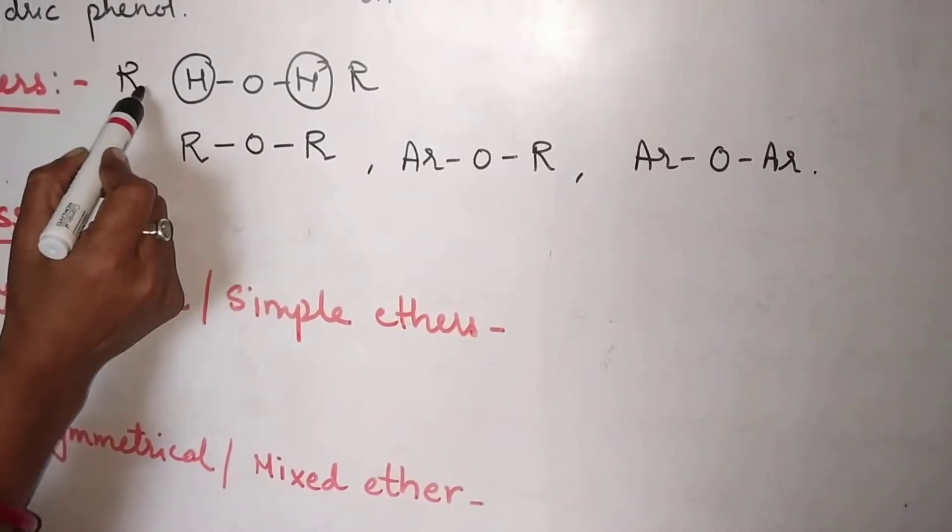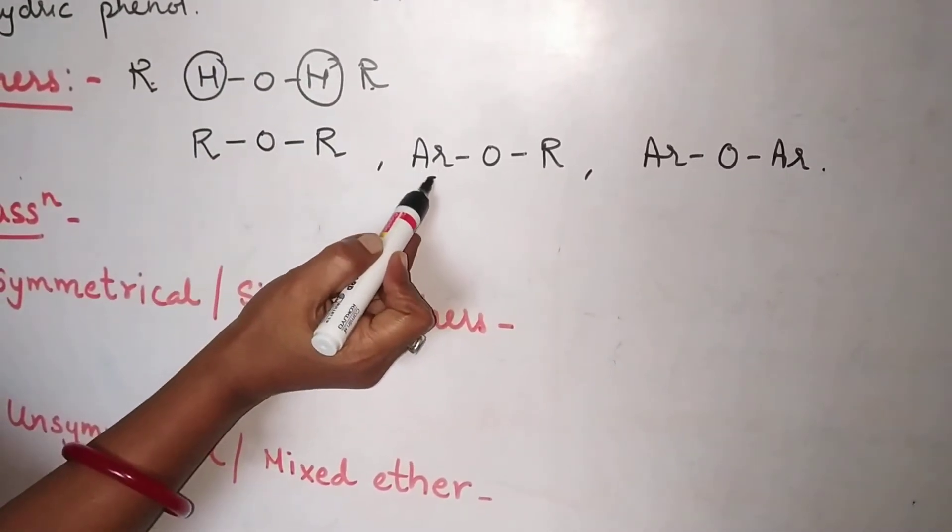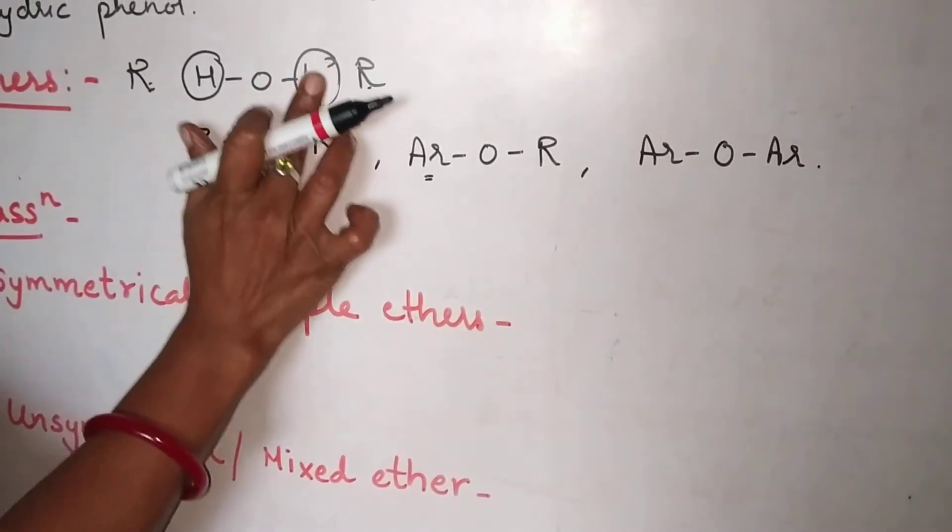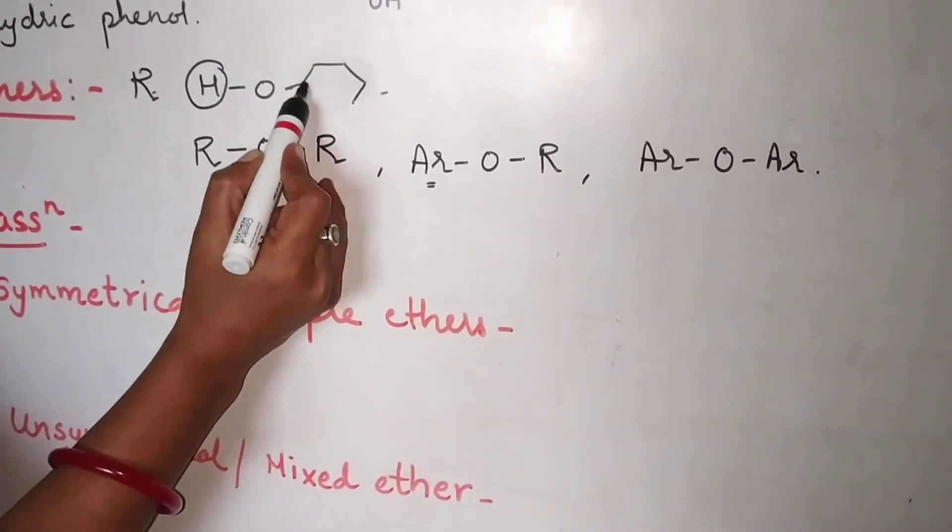Alkyl groups which may be same or different, or it is replaced sometimes by Ar, aromatic ring. You can put an aromatic ring here, benzene nucleus.